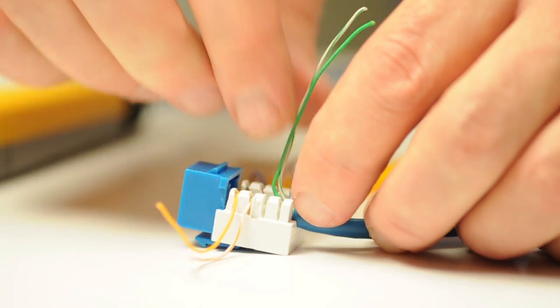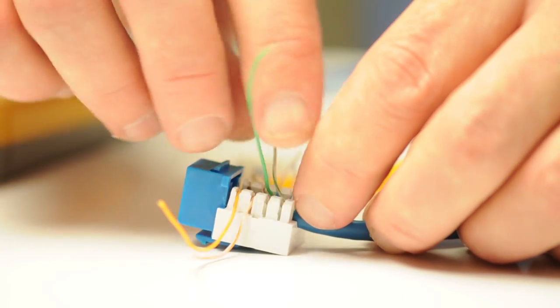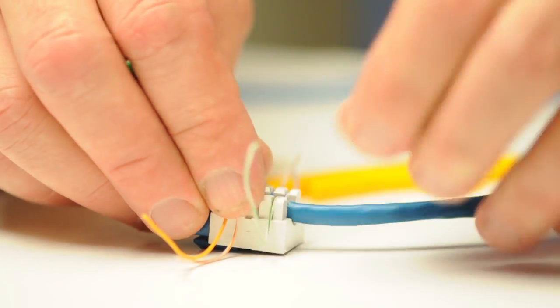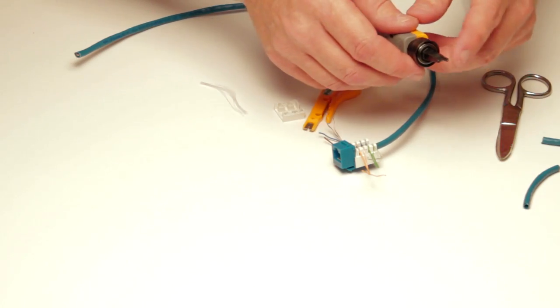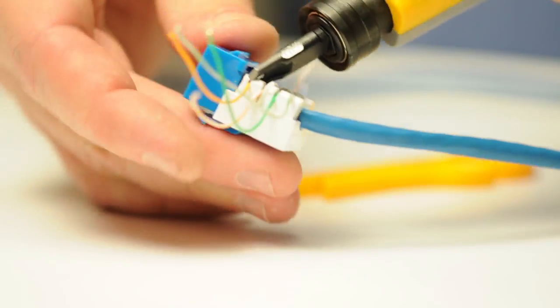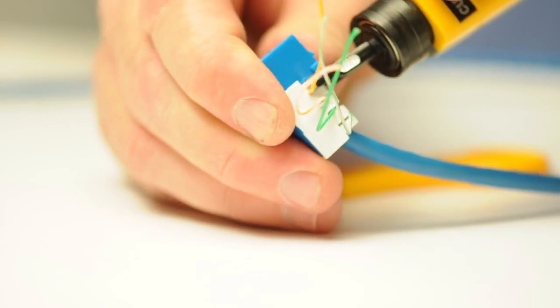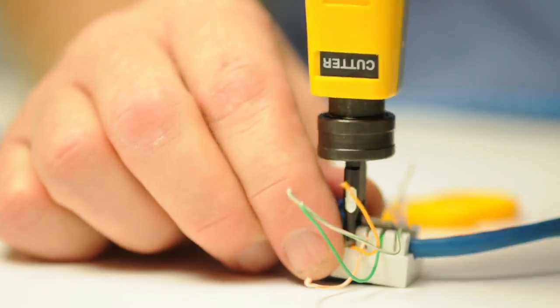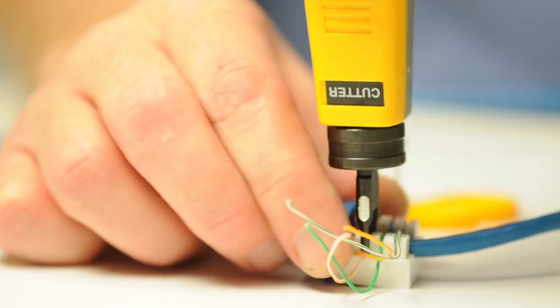Once you have laid out the conductors according to the right color code, take your impact tool and punch down the conductors. The impact tool pushes the cable into the IDC connectors and also removes any excess cable you have.